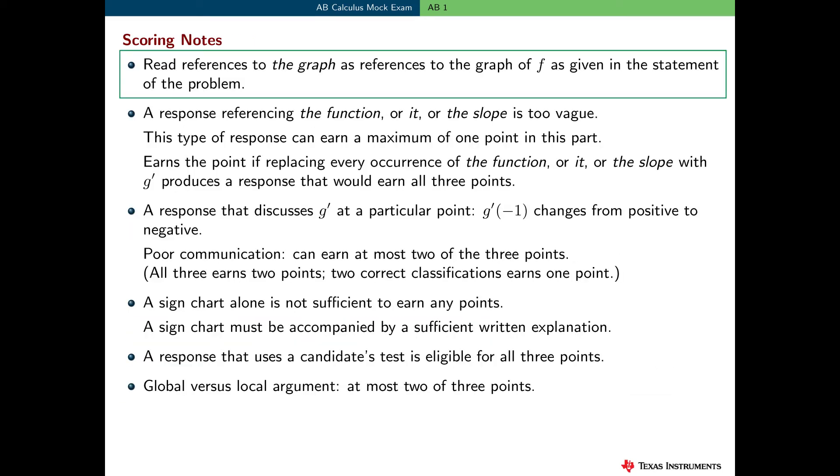Here are some additional scoring notes for part b. Now, some students in these types of problems use vague references in their justifications. So, in this problem, if a student uses the phrase the graph, we will assume that this means the graph of f, given in the statement of the problem. However, justifications that refer to the function or it or the slope are just too vague. There are a couple of functions already in this problem, a couple of possible slopes, and we just don't know and can't assume what it refers to.